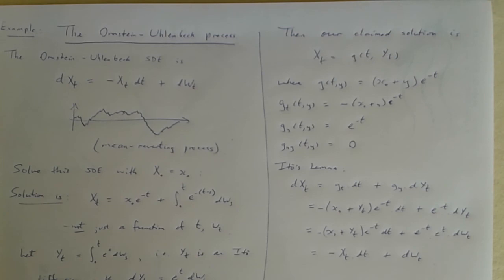So that this is now an explicit representation of the Ornstein-Uhlenbeck process, this is what it actually looks like. At time t it's still got some influence from the starting value but that decays over time because of the e to the minus t.